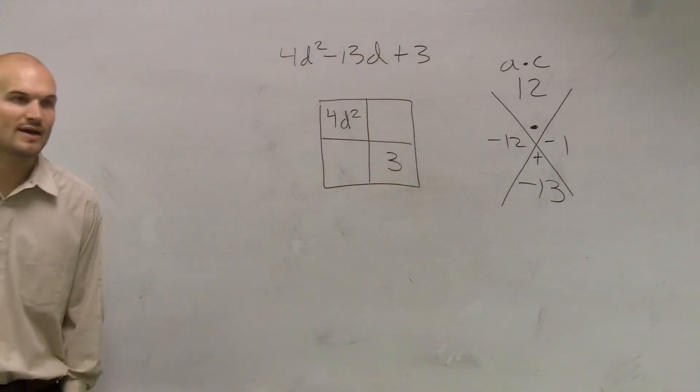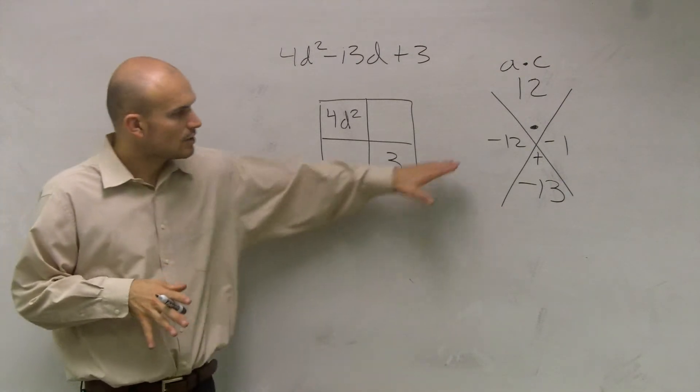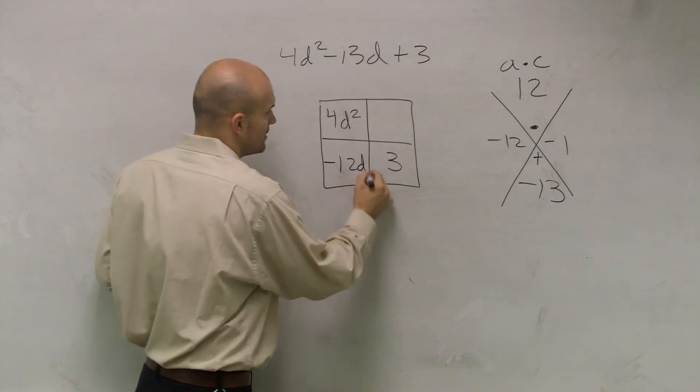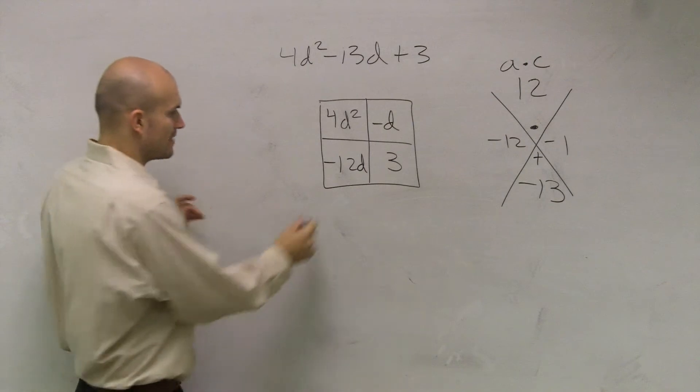So we're going to write negative 12 and negative 1, alright? Now, what those two numbers help you do is we can write them in here, in for our two areas.